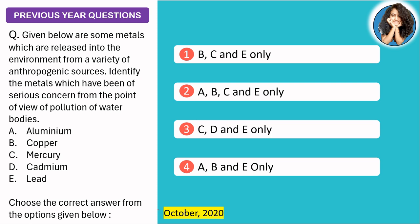The next question was asked in October 2020. The question reads: given below are some metals which are released into the environment from a variety of anthropogenic sources — meaning from human activities — identify the metals which have been of serious concern from the point of view of pollution of water bodies. We have not heard about aluminum causing water pollution. The serious ones are mercury, cadmium, and lead, and we have already discussed diseases linked to these three. So the correct answer is the third option.